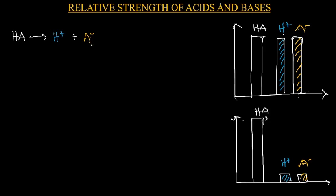So how do we tell the strength of this acid? If the acid is able to release or dissociate completely in solution to produce H⁺ and A⁻, then that particular acid is a strong acid. Similarly, for a strong base like MOH, it would dissociate completely to give us M⁺ and OH⁻, the hydroxide anion, in solution.